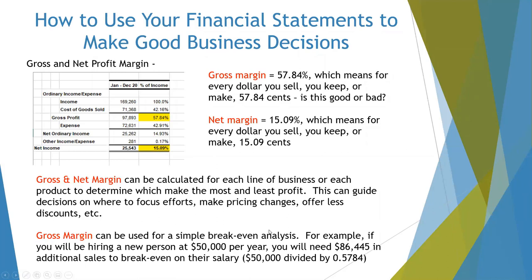Maybe you offer fewer discounts on the stuff that's not as profitable. Gross margin can also be used for a simple break-even analysis. A lot of business owners will say they want to spend X amount of dollars but don't know if they can afford it. A simple break-even analysis says: just divide that expense by your gross margin. If you're going to pay somebody $50,000 a year, you're going to need $86,445 in sales to break even on their salary. So you need to decide if that's attainable or not.